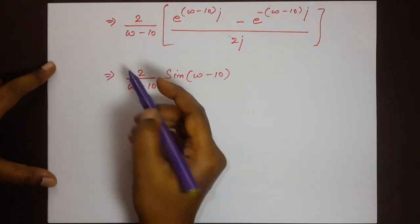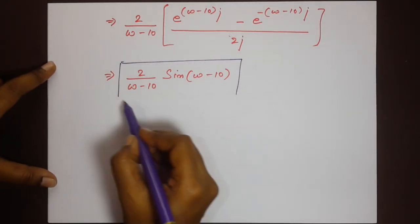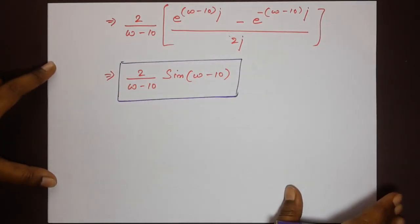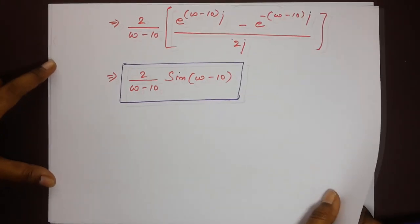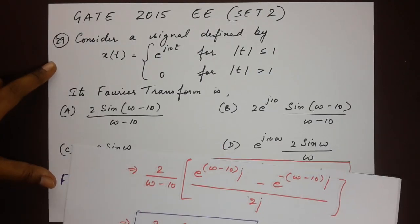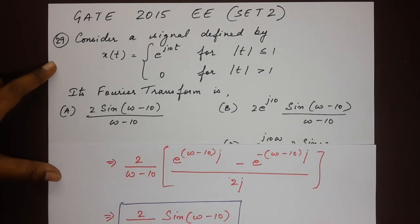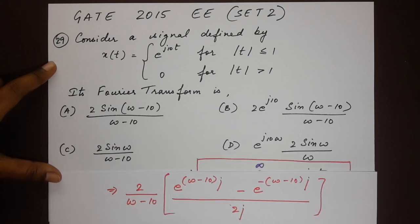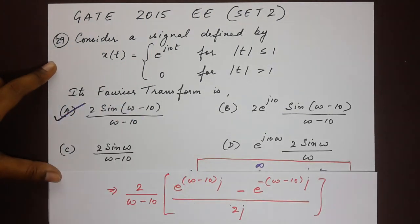So the final expression is 2·sin(ω−10) / (ω−10). Checking the options, this matches Option A.